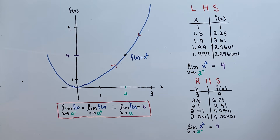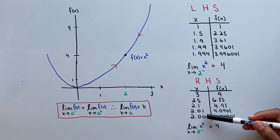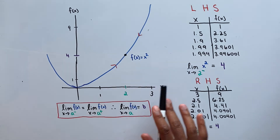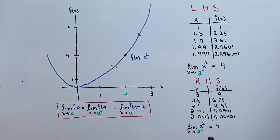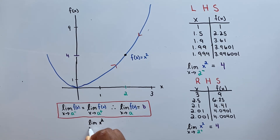Now remember, we have to take into consideration what our function is doing from the right side. So looking at our table, we see that as our x decreases to 2, our f of x also decreases and approaches 4. So we can say that the limit of our function as we approach the positive side of 2, since we're coming from the positive side of x, equals 4. And since the limit from the left side and the right side are equal to each other, we can say that the limit of x squared as x approaches 2 equals 4.